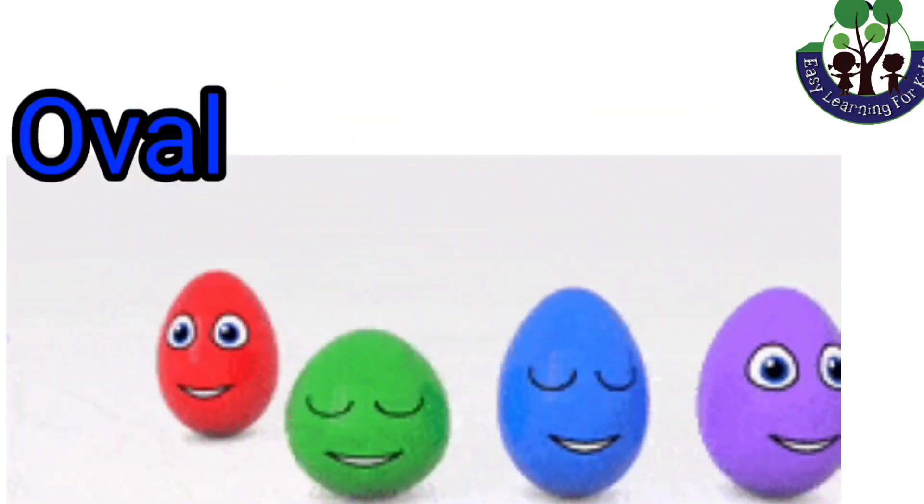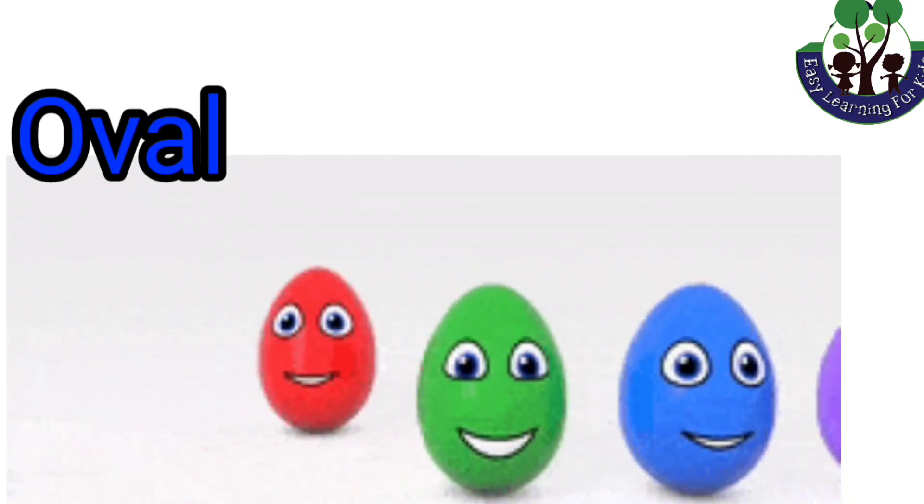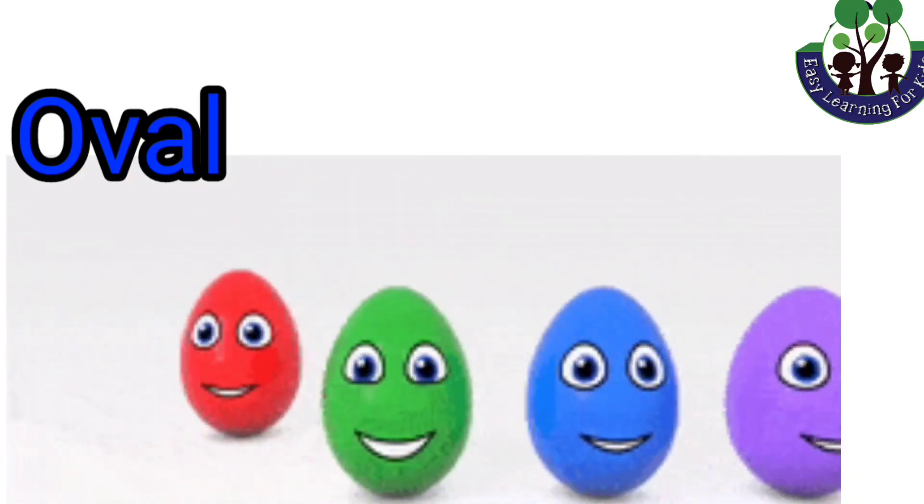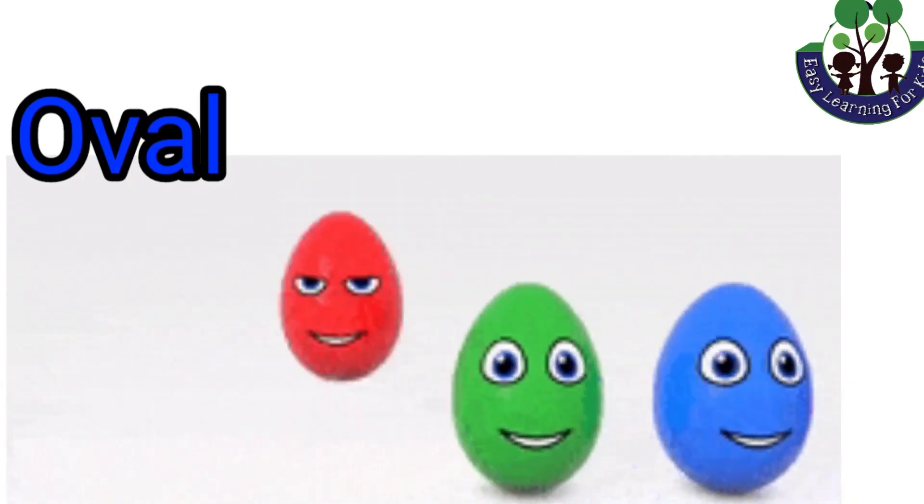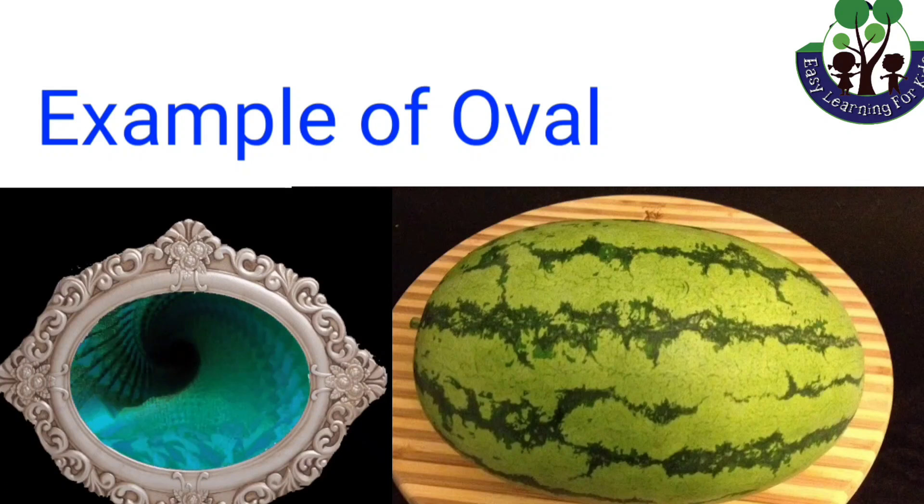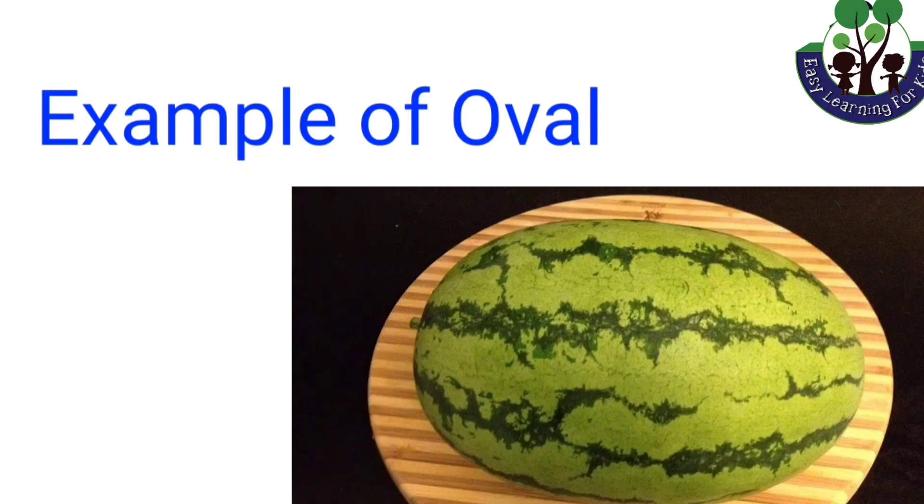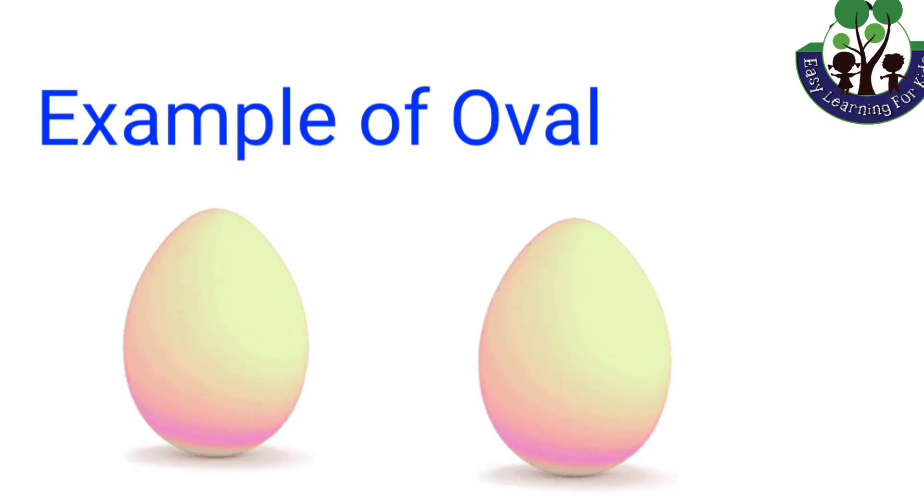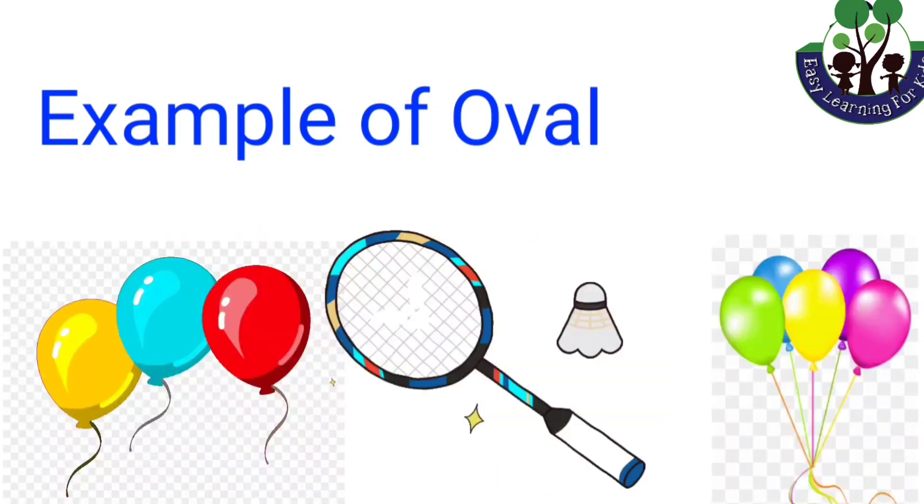Oval. An oval is an elongated shape slightly similar to a circle. It has no straight lines or corners. For example, mirror, watermelon, eggs, balloons, and badminton racket.